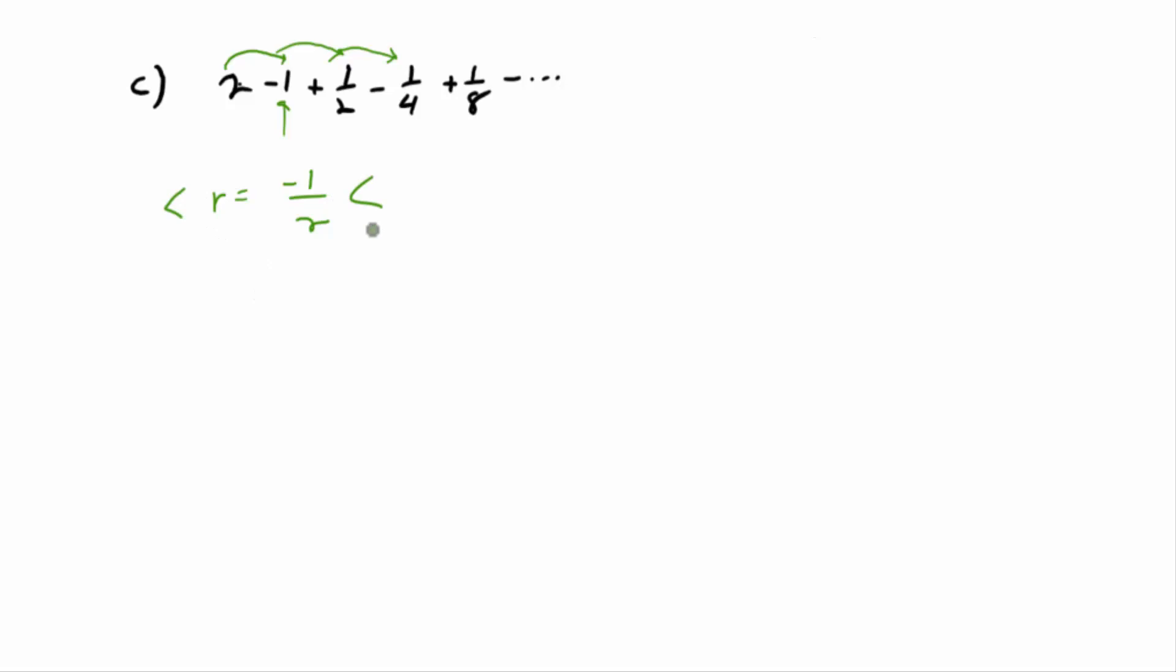Now, does this guy satisfy the requirement, negative 1 half? It's between negative 1 and 1, yep. So let's find that sum using that formula. The nice thing is A is obvious, right? A is the first term, so what's that? 2 over 1 minus negative 1 half. Yep. So what is that, 3 halves down there? 2 divided by 3 halves, what's that? 4 thirds.